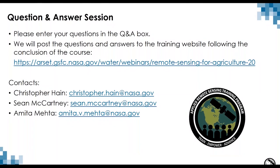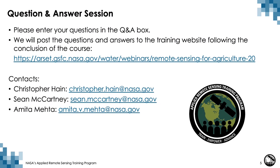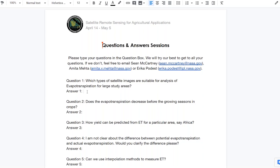Thank you Chris for such an informative presentation, providing a great conclusion to the webinar series. We'll now proceed to the question and answer session. The first question: which types of satellite images are suitable for analysis of evapotranspiration for large study areas? The answer depends on your application. Most energy balance methods rely on thermal infrared imagery. ALEXI runs with moderate resolution land surface temperature from geostationary satellites at two to four kilometers. For agricultural applications at the field scale, you really need to get down to Landsat or EcoStress at the 30-meter scale. There are ways of integrating thermal information across different scales as demonstrated with the multi-scale version of the model.